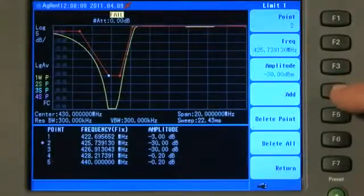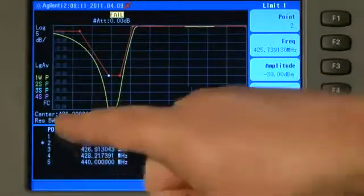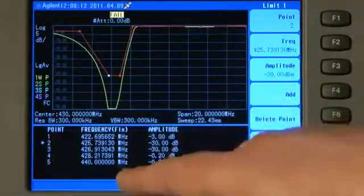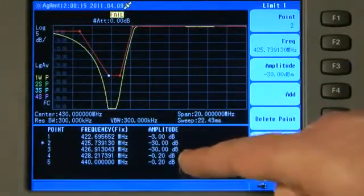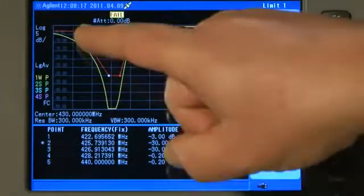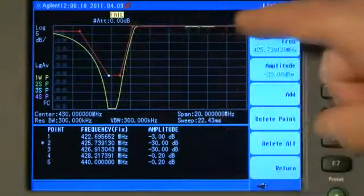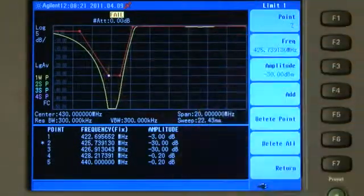Now if I go and edit this limit line here, you can see it is a simple table here. I have entered five points, five different frequencies and amplitude values for each of those points. You can see the dots here on the screen and the one I am currently editing is the white one.